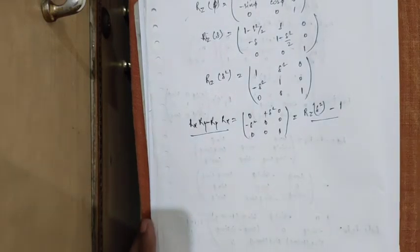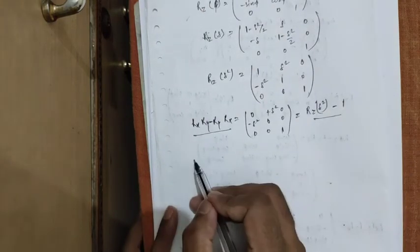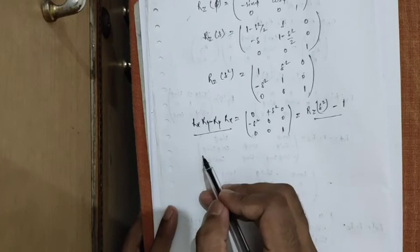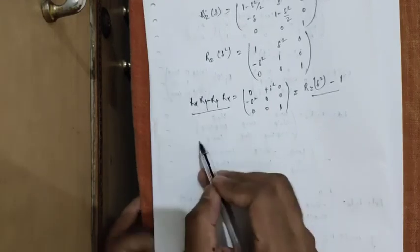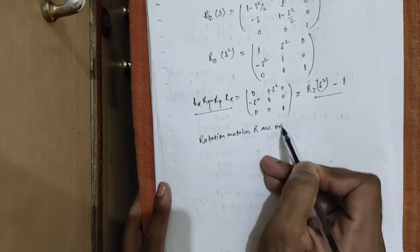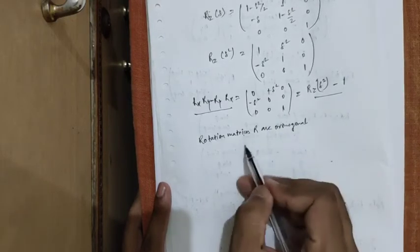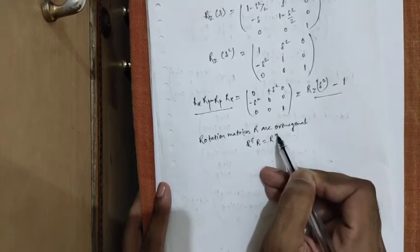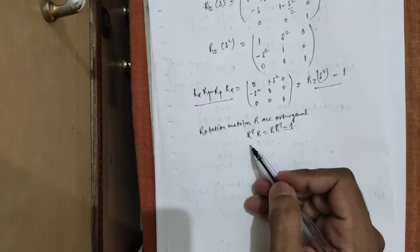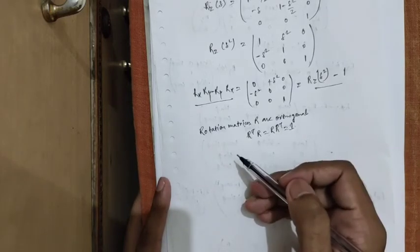This commutation relation will be useful in deriving the commutation relations of components of angular momentum, as we'll show in upcoming lectures. Now let's discuss some properties of rotational matrices in three dimensions. Rotation matrices are orthogonal, meaning they follow the property R^T · R = R · R^T = I, i.e., R^(−1) = R^T.